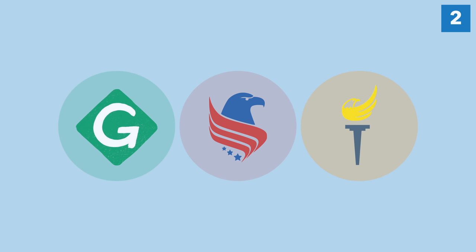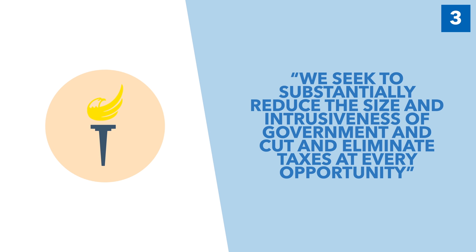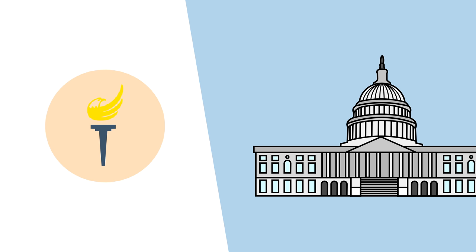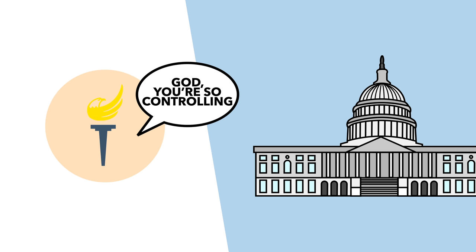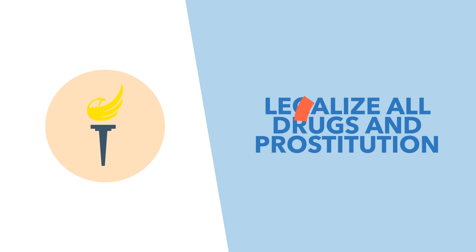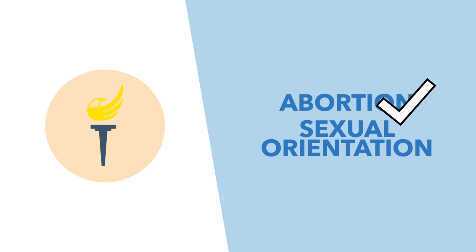So let's take a look at the individual parties. There are three main third parties that are recognised in at least 10 states: the Libertarian Party, the Green Party, and the Constitution Party. The Libertarian Party was founded in 1971, and in their words, they seek to substantially reduce the size and intrusiveness of government and cut and eliminate taxes at every opportunity. Libertarians believe that the size of government has grown too powerful and controls too many aspects of citizens' lives. Their platform seeks to reduce government with the goal of increasing individual rights, including legalising all drugs and prostitution, reducing or eliminating taxes, and allowing people determination over their own lives, including abortion and sexual orientation.